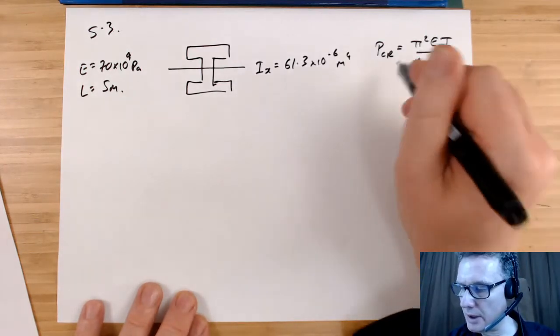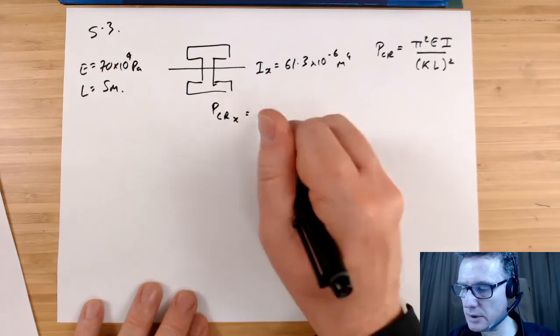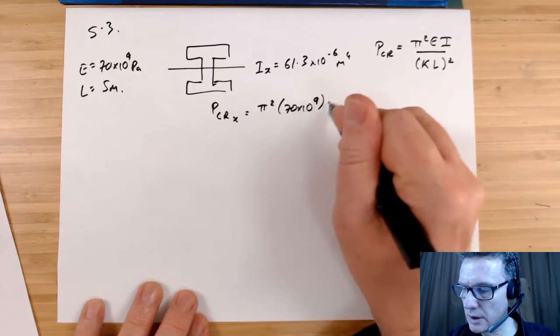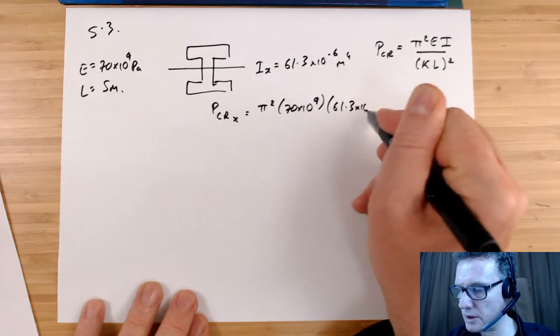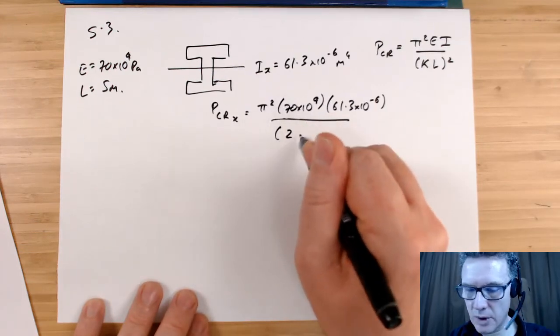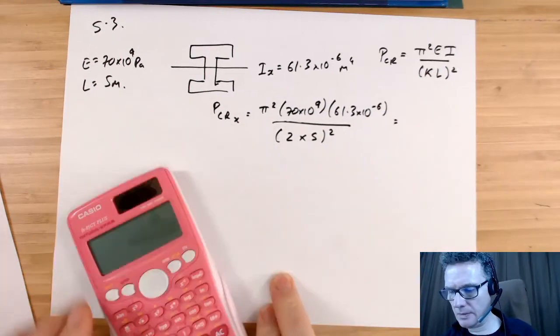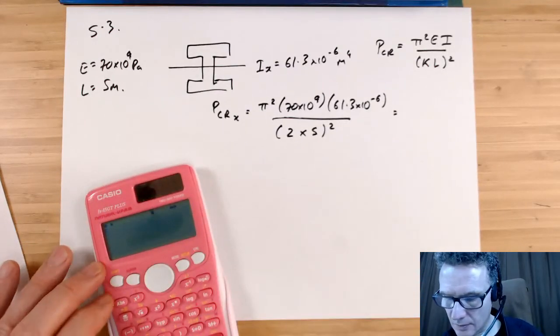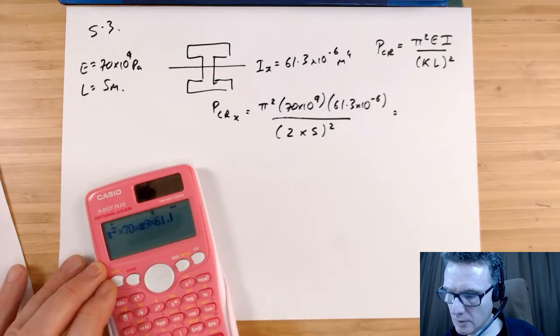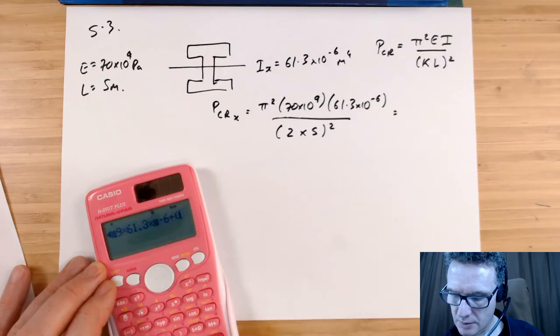So the critical buckling in the x direction is going to be what? P_cr_x equals pi squared, 70 times 10 to the 9, and that's going to be 61.3 times 10 to the minus 6, all over 2 times 5 squared.